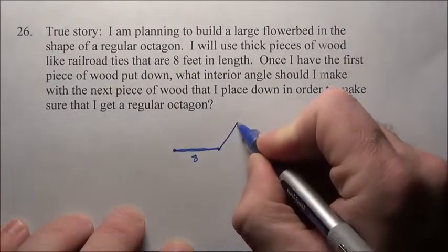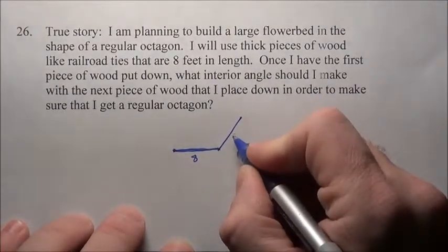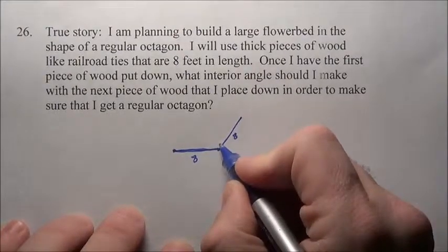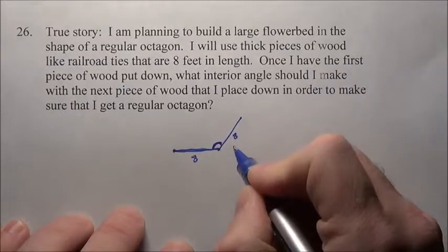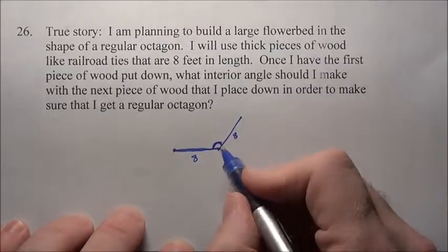So I need to put this piece down so it's a perfect octagon. That would be 8 feet there too. I'm trying to figure out what angle to use right here. Well, knowing it's an octagon which has 8 sides,